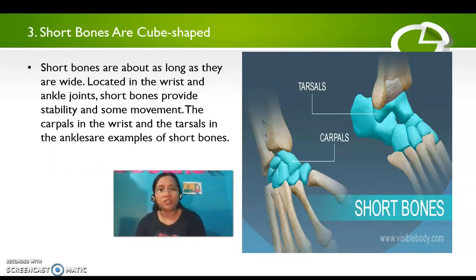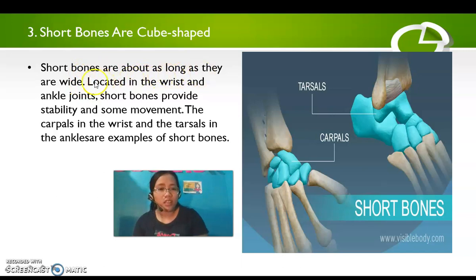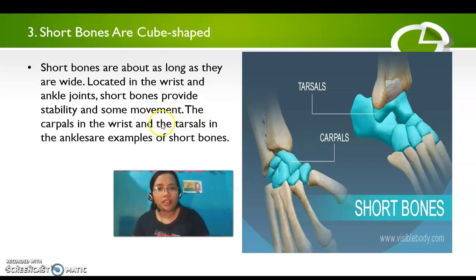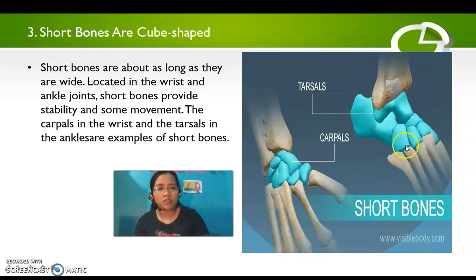Number three is the short bones, which are cube-shaped. Short bones are about as long as they are wide, located in the wrist and ankle joints. Short bones provide stability and some movement. The carpals in the wrist and the tarsals in the ankle are examples of short bones.